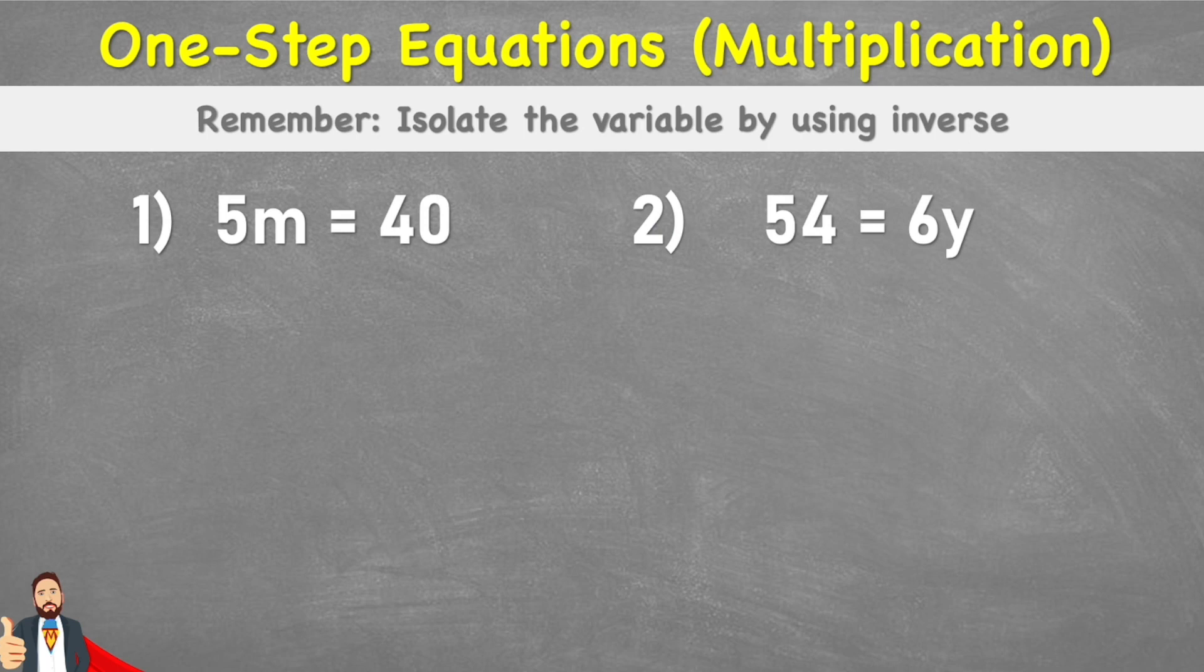So we have these two questions that we're looking at. We have 5m equals 40 and we have 54 equals 6y. And we're going to remember when we're doing a skill like this that we want to isolate the variable by using the inverse.